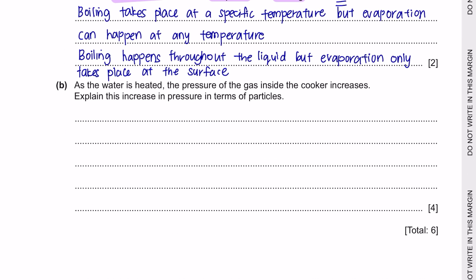Next question part B. As the water is heated, the pressure of the gas inside the cooker increases. Explain this increase in pressure in terms of particles. Now when water is heated, the water molecules will gain kinetic energy. If they gain kinetic energy, they will collide with other molecules and the inner surface of the pressure cooker more often. More collision means that more force is exerted on the inner wall, and we know that pressure means force over per unit area. So the more the force is exerted per unit area, the higher the pressure.